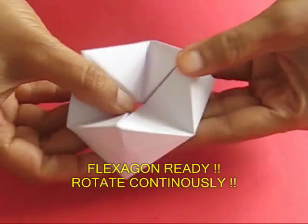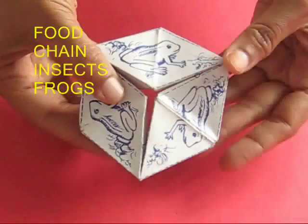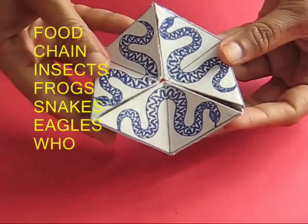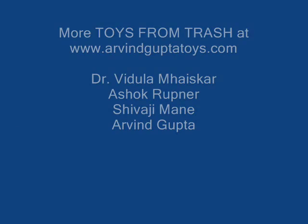You can also make a food chain. Draw insects. Insects are eaten by the frogs. Frogs are eaten by the snakes. Snakes are eaten by the eagles. This is a very nice food chain.